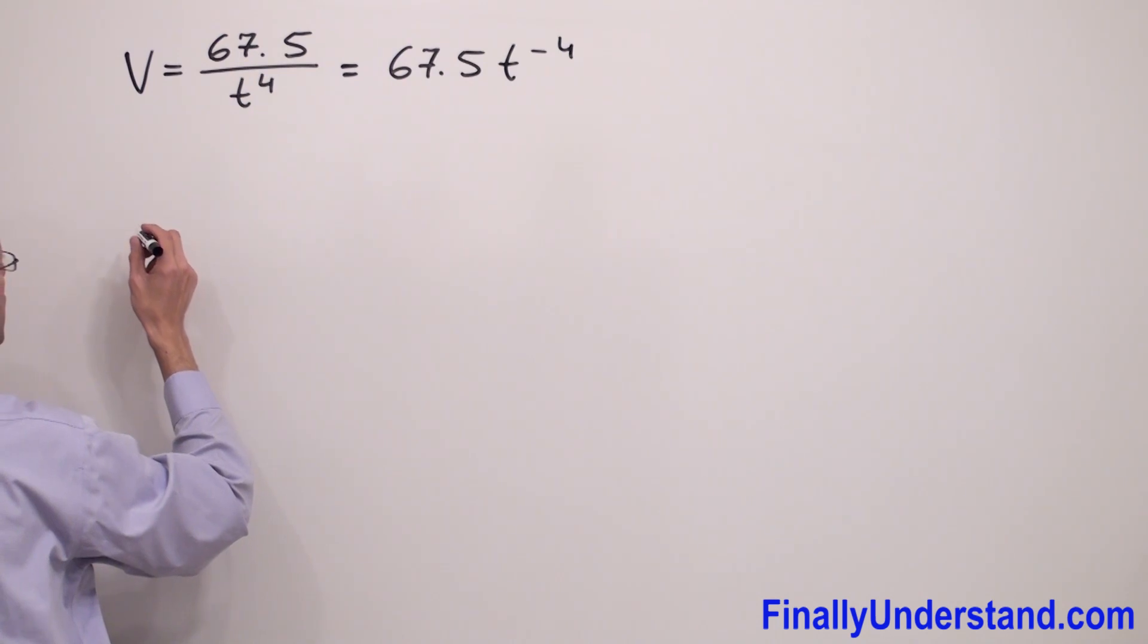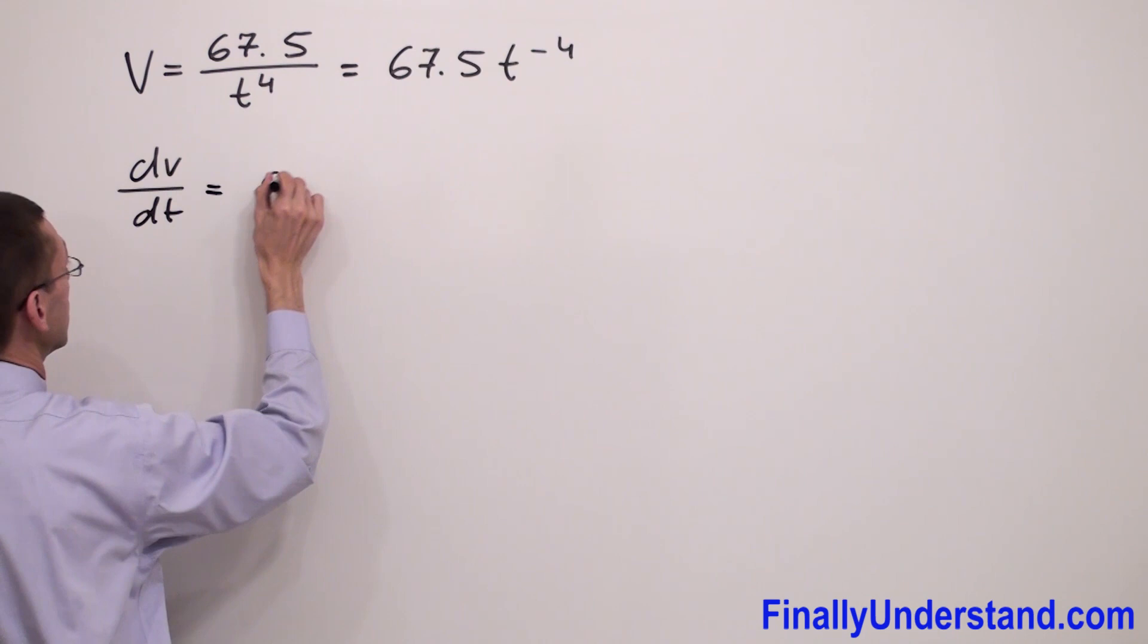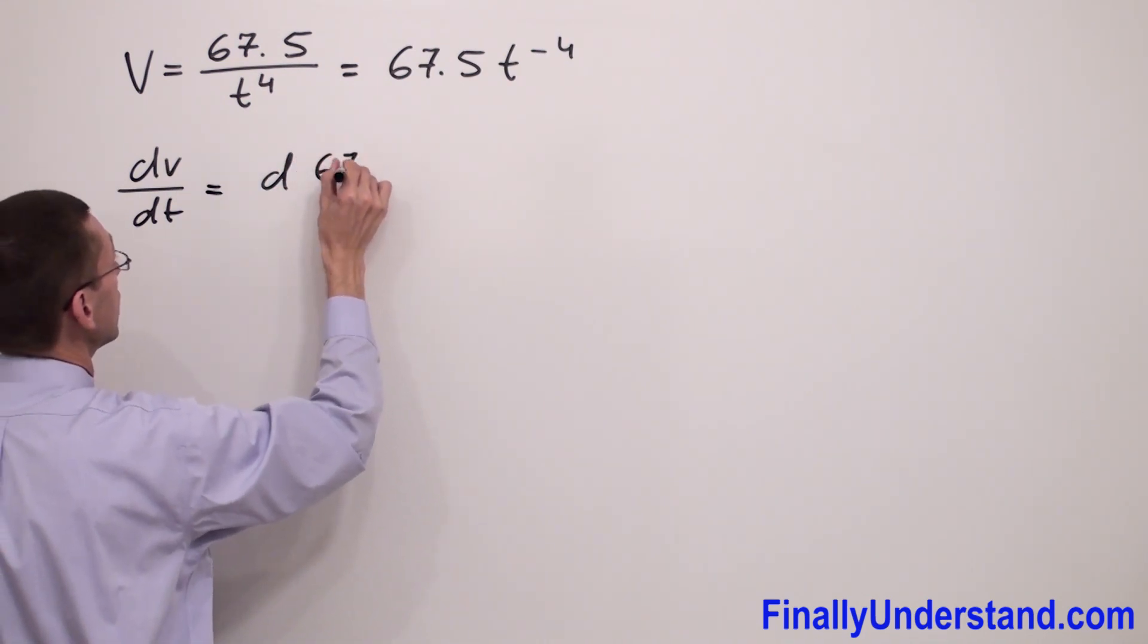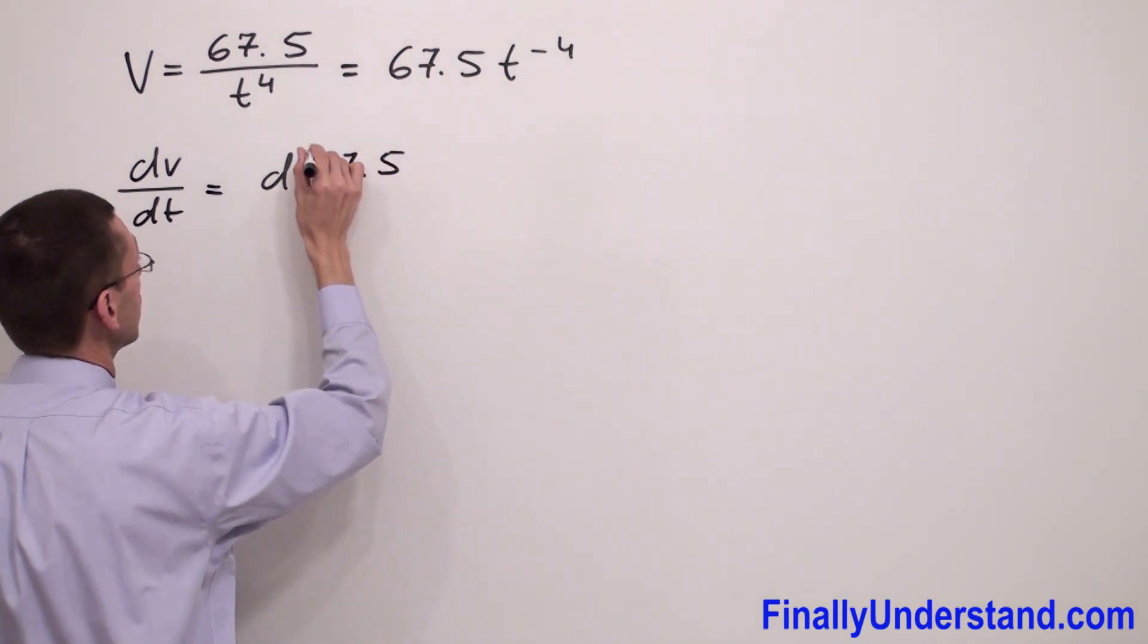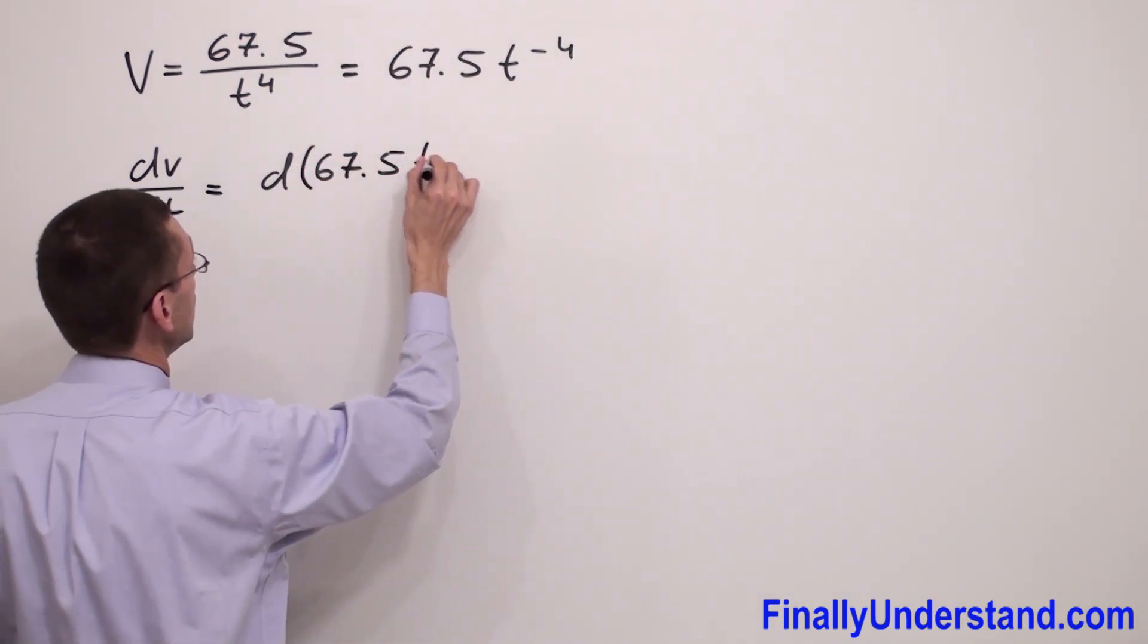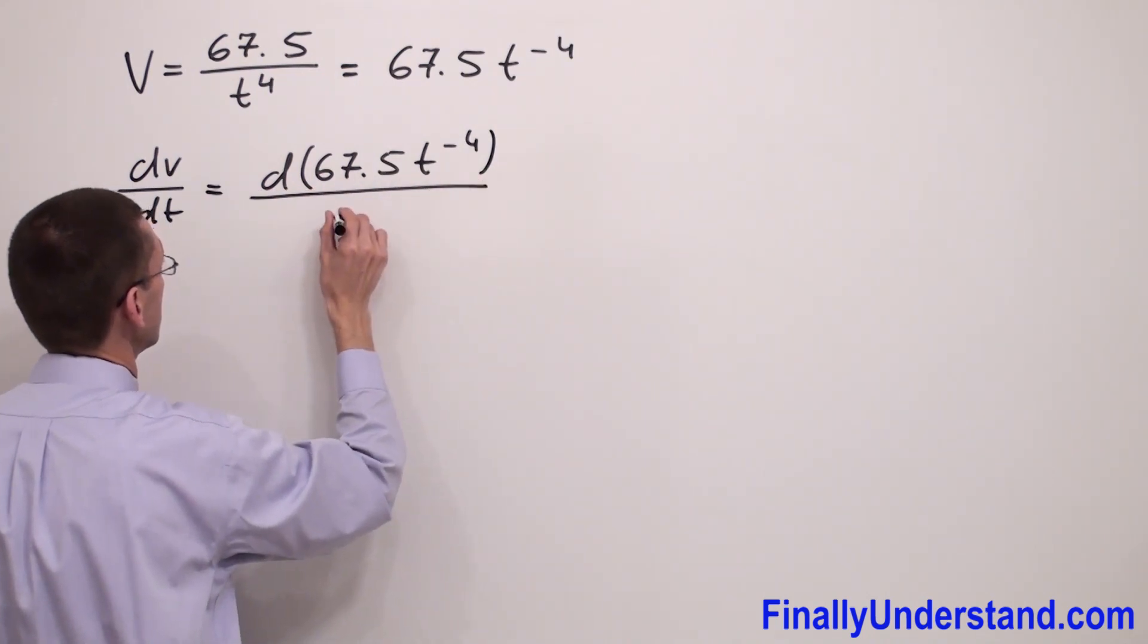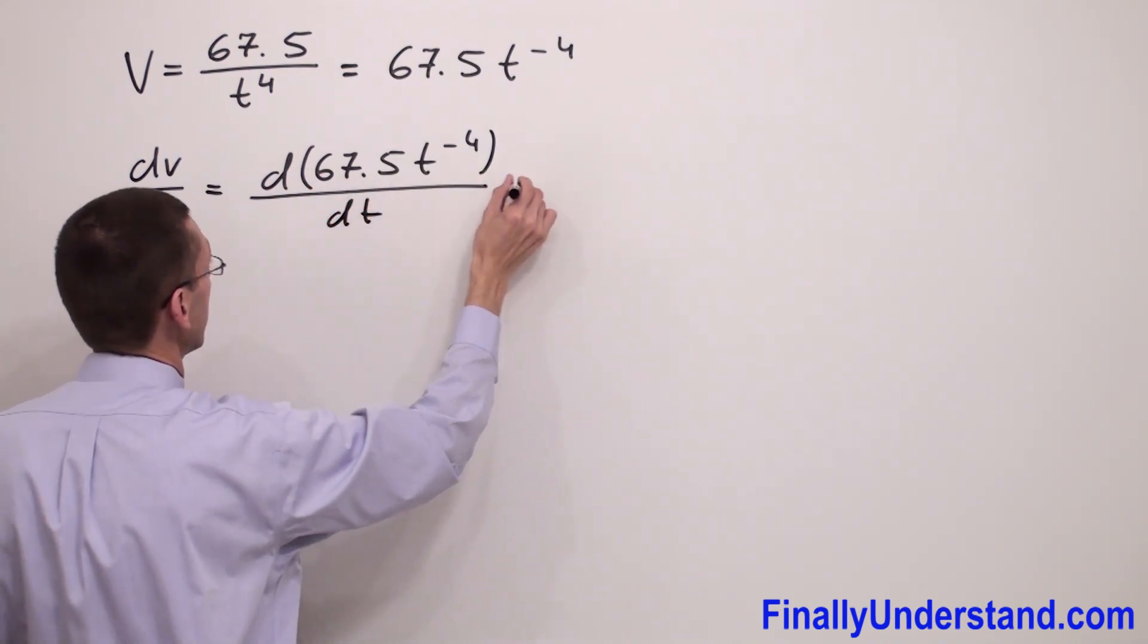So the derivative, dv over dt - you're supposed to write like this: derivative. And I have 67.5 t to negative 4 over dt is equal...